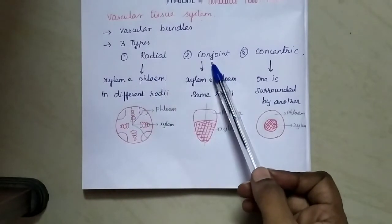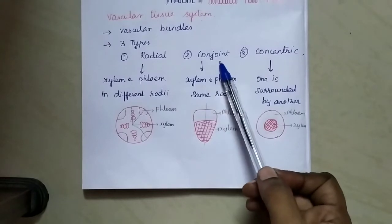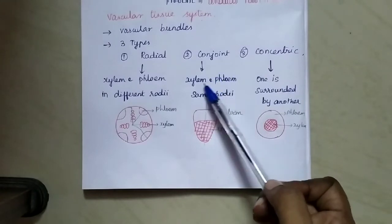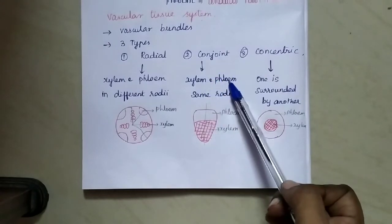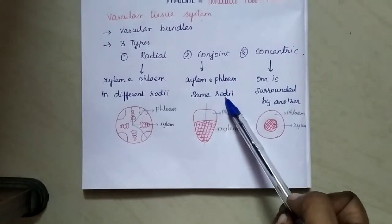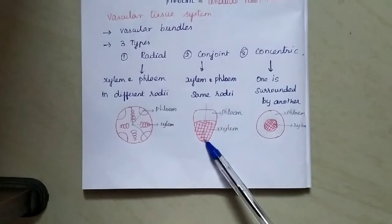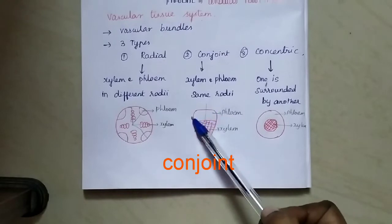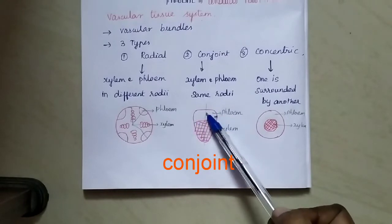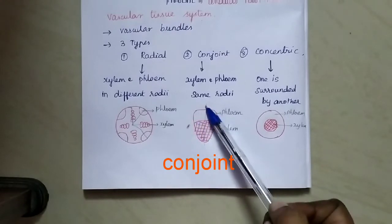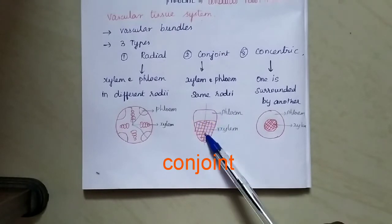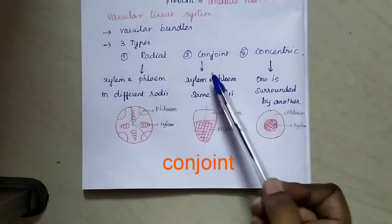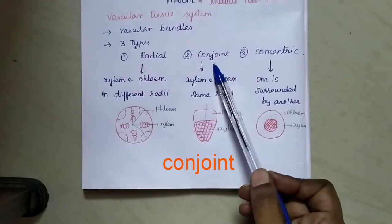The second one is the conjoined vascular bundle. Here, the xylem and phloem are arranged in the same radius. Look at this diagram — this is xylem and this is phloem. Both are arranged in the same radius. This type of arrangement is called a conjoined vascular bundle.